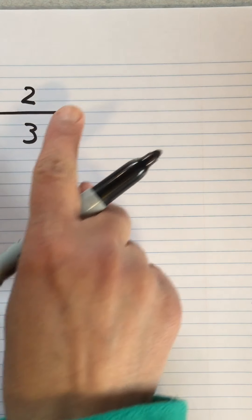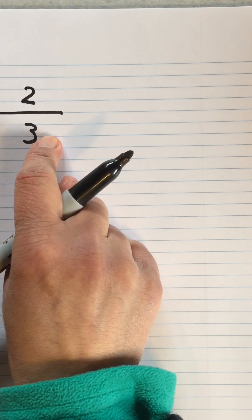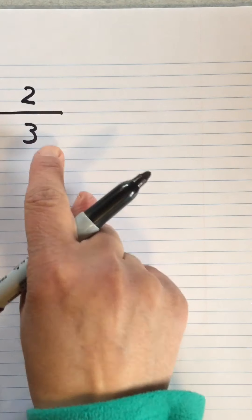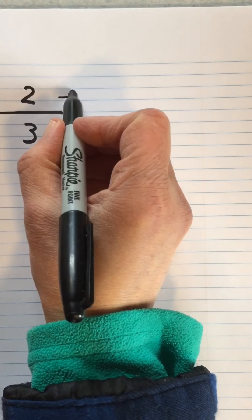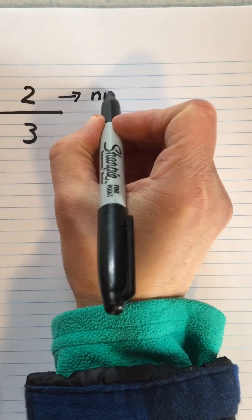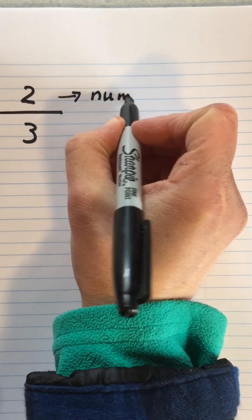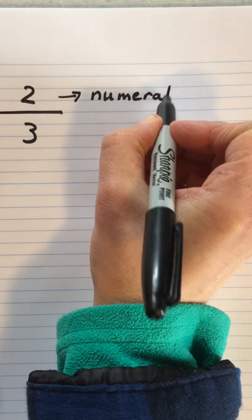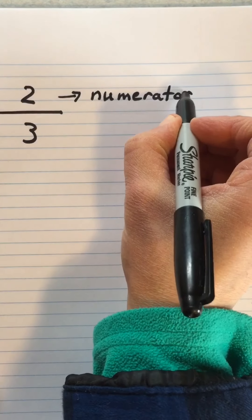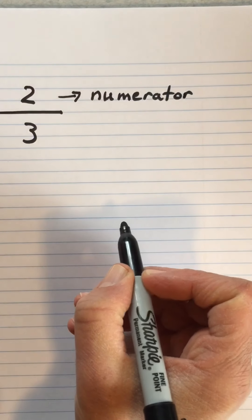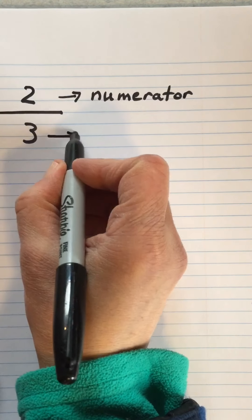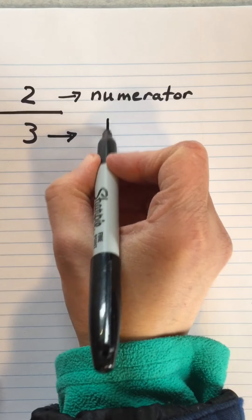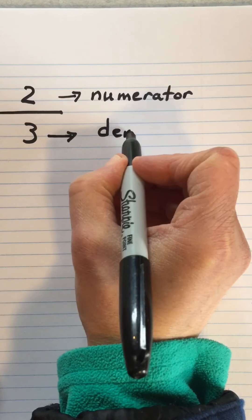The numbers represent something. The number at the top is called a numerator. The number at the bottom is called the denominator.